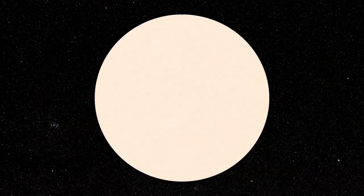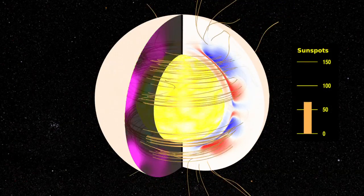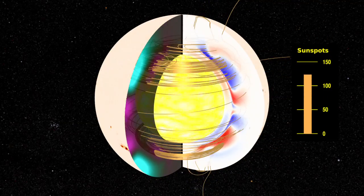Solar flares and CMEs are both driven by magnetic reconnection. This is where the Sun winds up the magnetic field and causes oppositely directed magnetic fields to annihilate. But you can't just get rid of magnetic field or energy — you have to convert and transfer that energy into other things, such as plasma motions, accelerating the plasma, heating up the plasma, and also giving out more light.